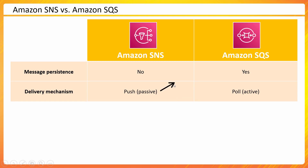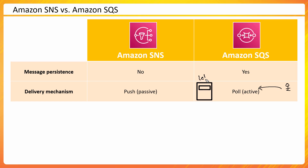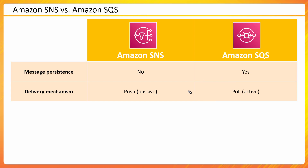Regarding delivery mechanism: SNS is push-based — messages are pushed to your mobile, via SMS, or to your email. SQS is poll-based or active — as the receiver, you go to the queue and get the message. Think of it like a letterbox: someone puts letters in and you decide when to go pick them up — hourly, daily, or weekly. You have to actively poll the queue to get the information.